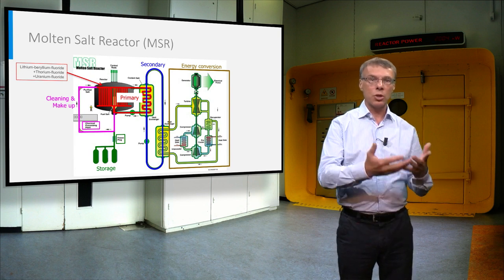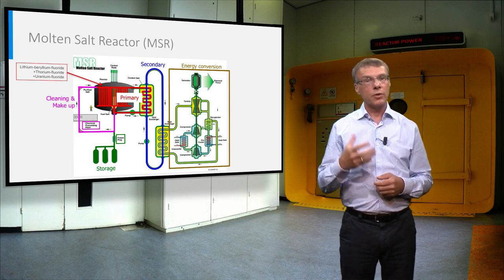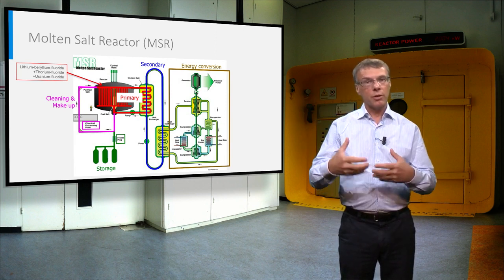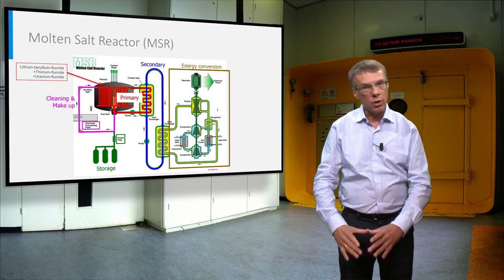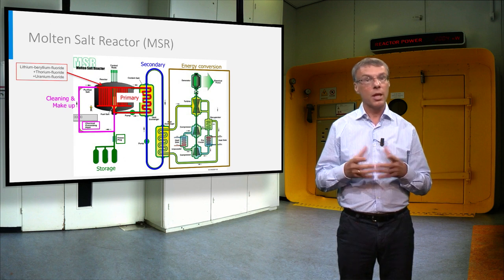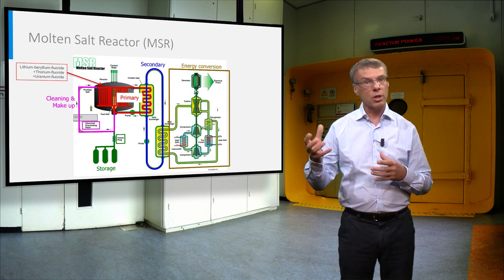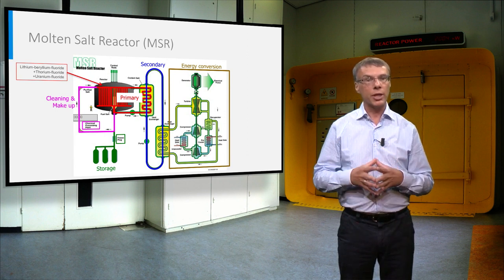In a molten salt reactor, the salt is allowed to freely expand and flow. If the salt heats up too much, the freeze plug in the green pipe will melt and the salt will freely flow into the safe storage tanks beneath the reactor core. These can be cooled with water via natural convection or via another passive cooling mechanism to avoid overheating.